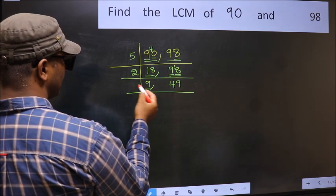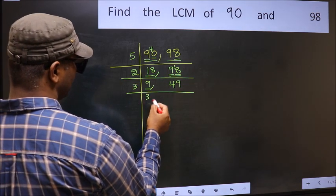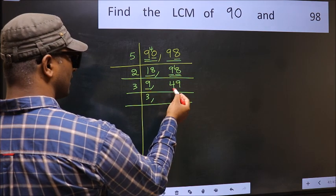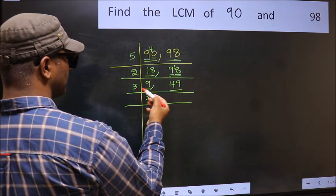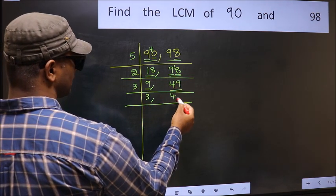Now here we have 9. 9 is 3 threes 9. The other number, 49, not divisible by 3, so you write it down as it is.